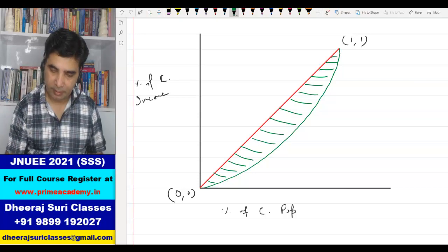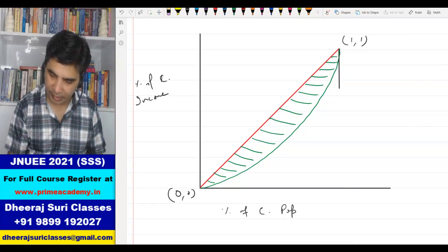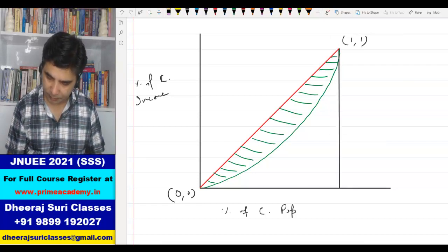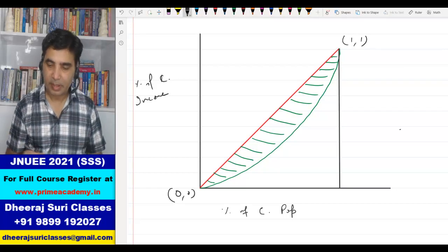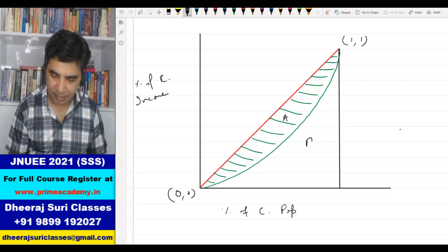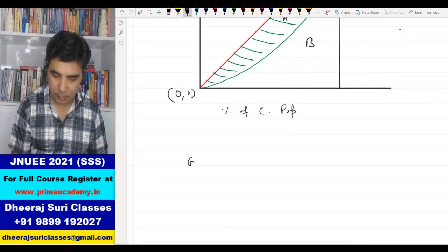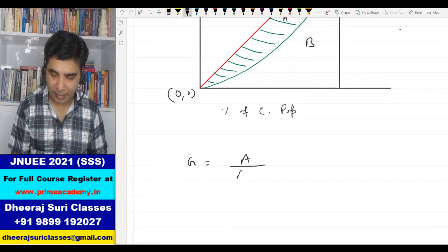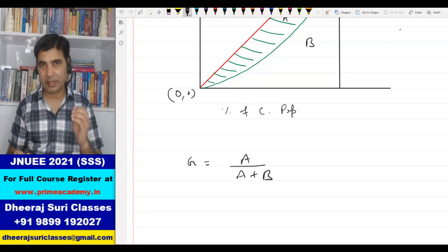For measuring this Gini coefficient, I would like to draw one vertical line from here. This is a vertical line. Now I would like to call this region as A and this region as B. So Gini coefficient is A divided by A plus B.